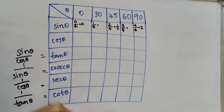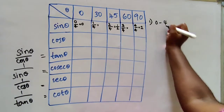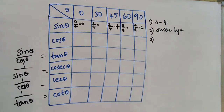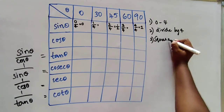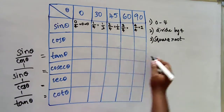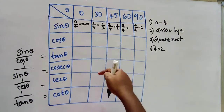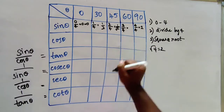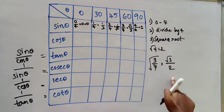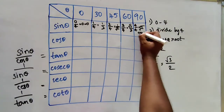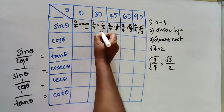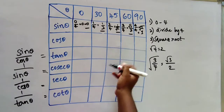Next, apply square root to all those answers. So first: 0 to 4 numbers written, next divide by 4, then apply square root. Square root of 0 is 0. Square root of 1/4 is 1/2, since root of 4 is 2. Square root of 1/2 is 1 by root 2. Square root of 3/4 is root 3 by 2. Square root of 1 is 1. So the sin values are: sin 0 = 0, sin 30 = 1/2, sin 45 = 1/√2, sin 60 = √3/2, sin 90 = 1.